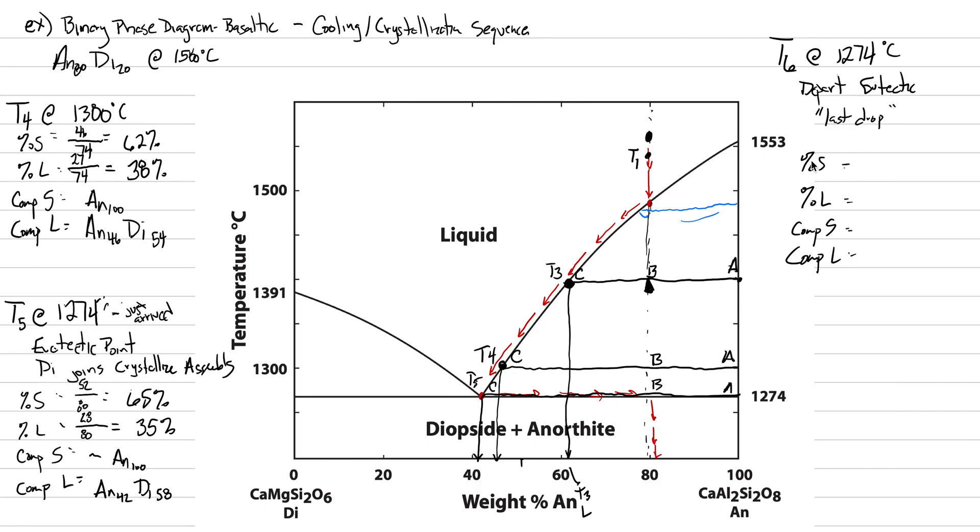At the last drop crystallizing, that means the whole thing is 100% solid. Percent liquid is essentially zero. If we're about 100% solid, that means the magma that we started with has to now be the composition of the rock that we're ended with. Conservation. The composition of the solid is now AN80DI20. We have crystallized 20% diopside while sitting at that eutectic point. When we arrived at the eutectic, we had a composition of AN100. Now 20% of it's diopside. The composition of the liquid, that last drop, is AN42DI58.